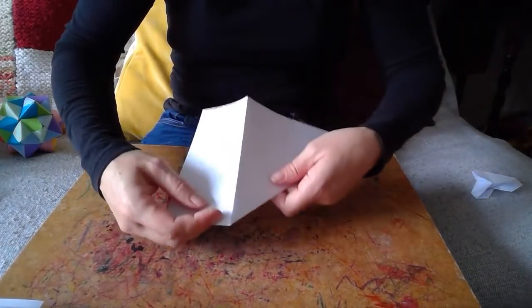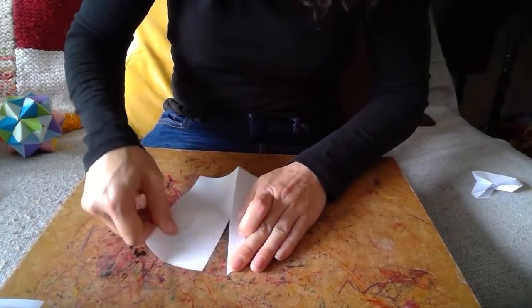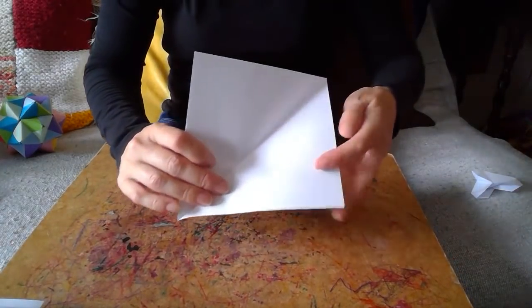And next again I'm going to do a little tiny nick and get rid of that rectangle. Right so now we have a square which is the basis for doing some origami.